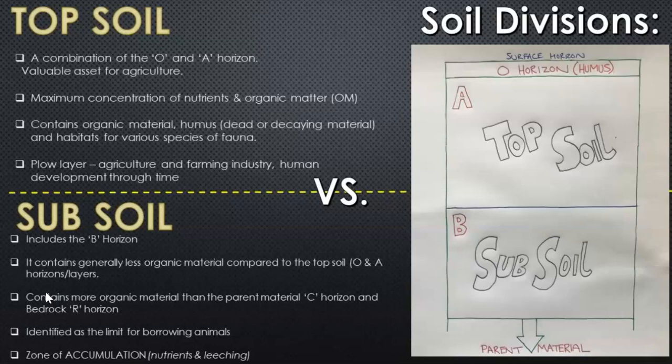The topsoil includes the O and the A horizon, which are the top layers. O stands for organic material, and the A horizon is a very high level of organic material mixed in with the mineral particles. It has a lot of pore spaces due to being close to the surface with less gravity pushing down and less compaction from weight above it. Topsoil also contains a lot of nutrients, is very productive for vegetation and biota, and can contain a lot of humus — the result of decomposing plant and animal material — as well as various species of fauna.